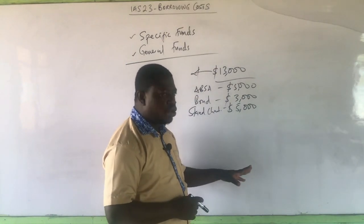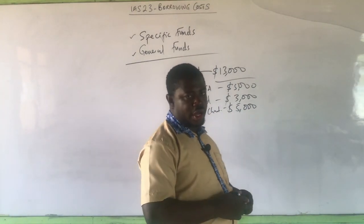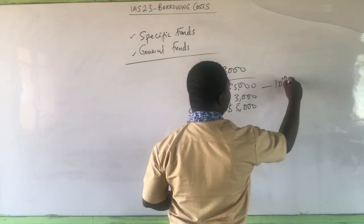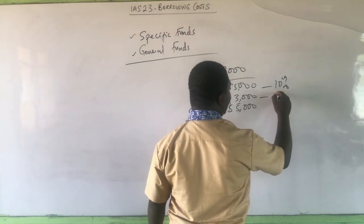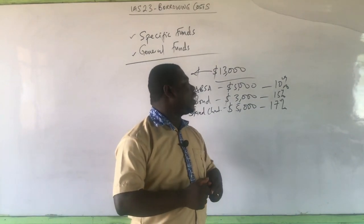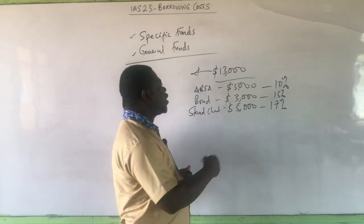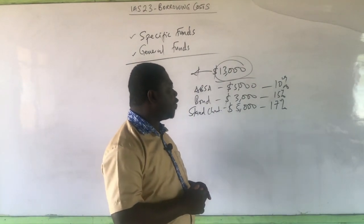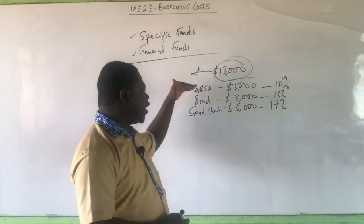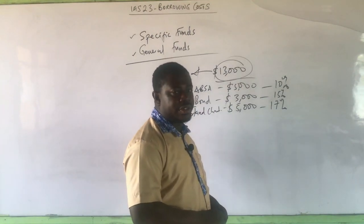The challenge this creates is that the loans may come in at different interest rates and carry different ancillary costs. Assuming it's just the interest rate: 10% per annum on the loan from AFSA, 15% per annum on the bonds, and 17% per annum from Standard Chartered. You will see that there is not one interest rate for the $13,000 we are going to use. There is a variation in the rate of interest because of the different sources. So we have to find an average of these rates and apply it on the $13,000 being used.